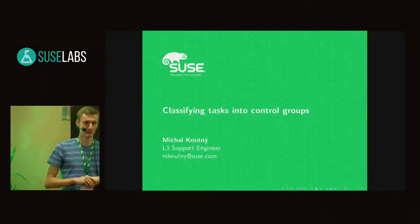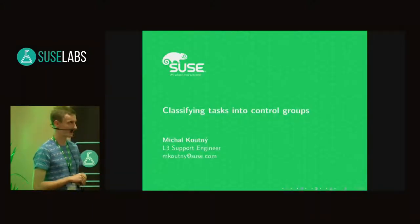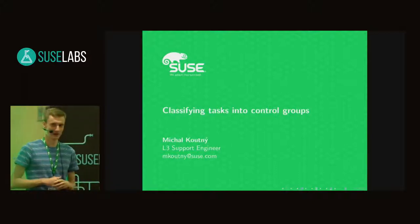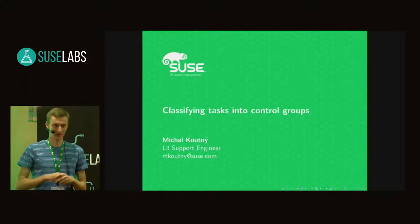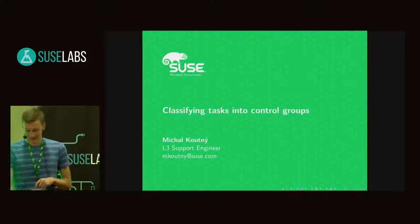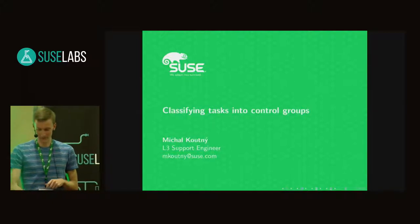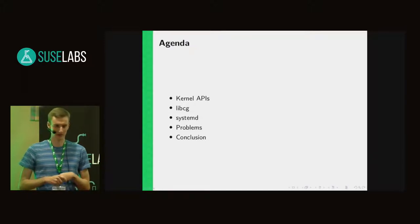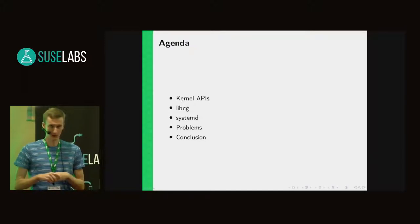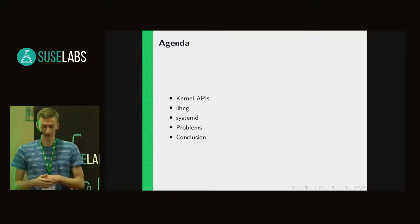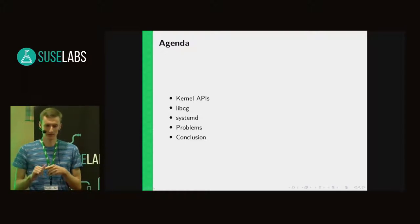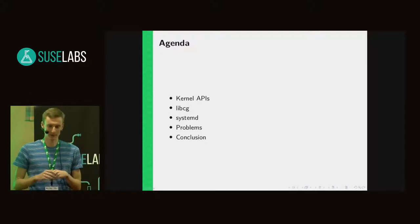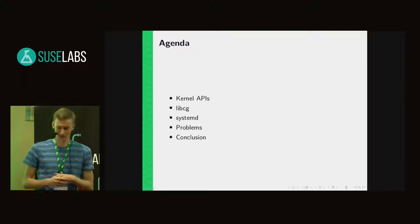Hello, I'm Michal Koutny. I work in L3 and today I prepared a short talk about classifying tasks into control groups. We should start with a short introduction of the kernel APIs that we are provided with, then look more onto the user space side — that means libcg and systemd — then I will describe the problems that arise between these two, and that will be all.